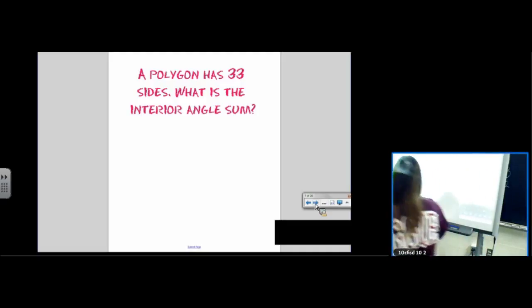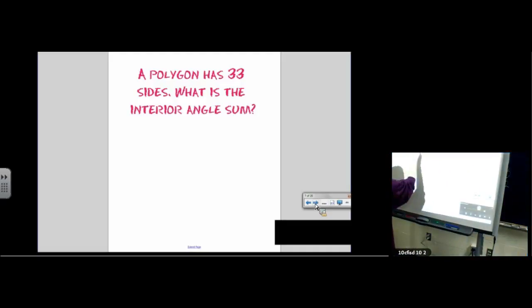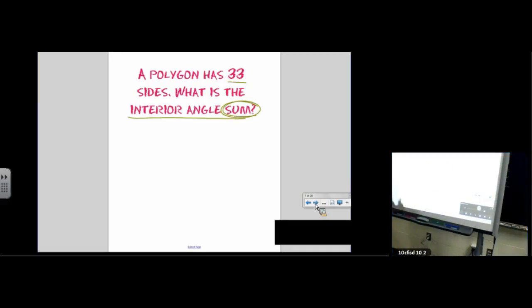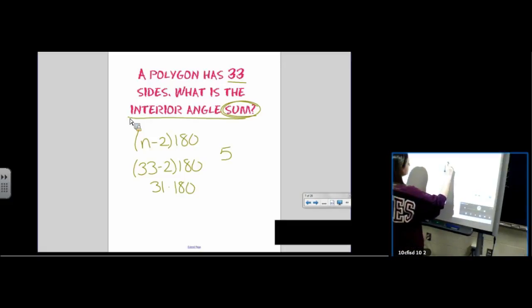So this question is asking for the interior angle sum of a 33 sided figure. We use the formula we learned which is number of sides minus 2 times 180. Our number of sides is 33. 33 minus 2 times 180. 31 times 180 gets us 5,580 degrees.